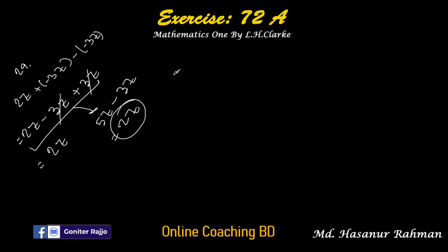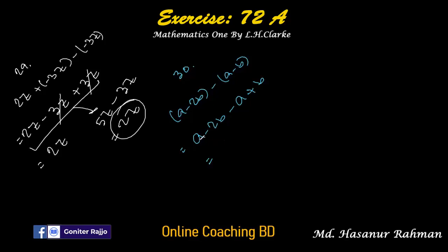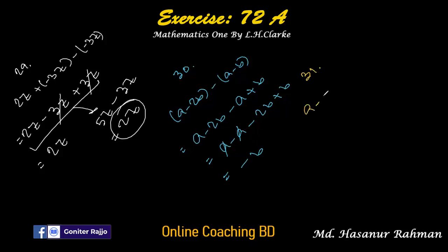Number thirty: a minus 2b minus (a minus b). Expanding: minus into a is minus a, minus into minus b is plus b. So we have a minus 2b minus a plus b. The a and minus a cancel: minus 2b plus b is minus b.